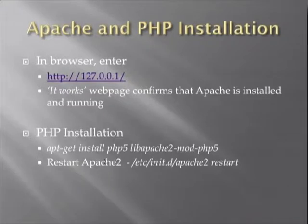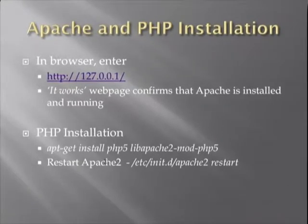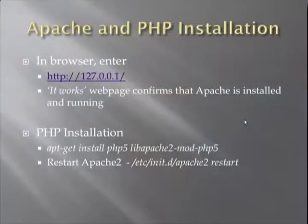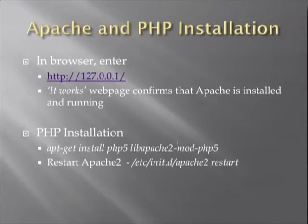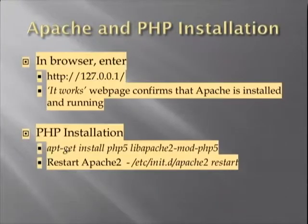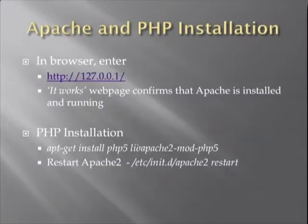First verify that 127.0.0.1 works, and then test with your machine name. Now let us install PHP — follow this command: apt-get install php5 libapache2-mod-php5.